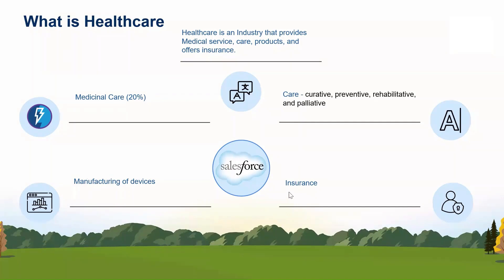Then comes insurance — all the medical insurance or different types of plans which a patient opts for fall under this category of insurance. Now we have an overview of healthcare. Let's dive deeper into what is the healthcare industry and what are its sub-sectors or pillars.